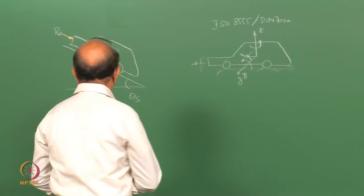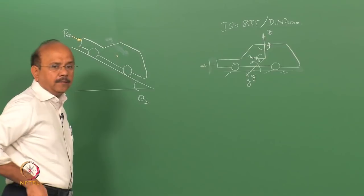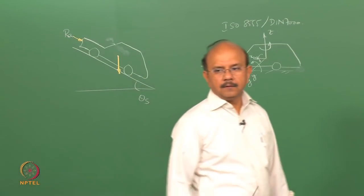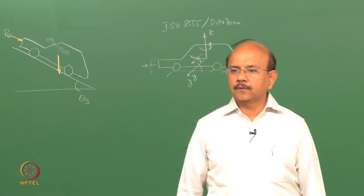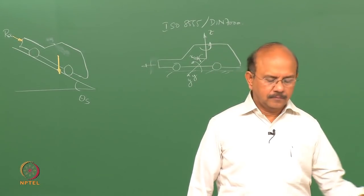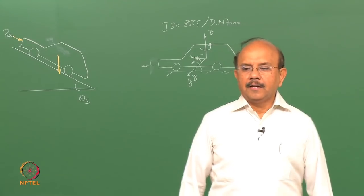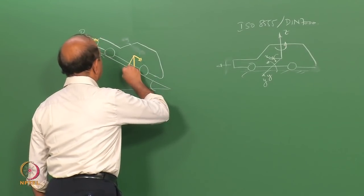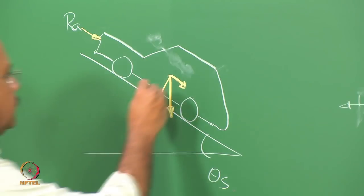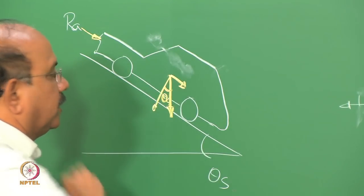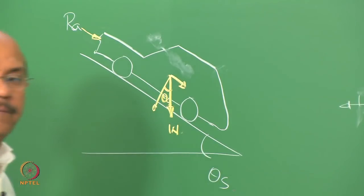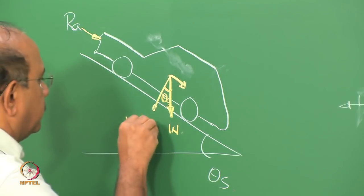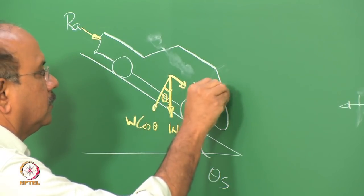The next important force acting on this body is the gravitational pull or gravitational force, which we write as mg or W. That can be resolved into two directions: if the slope angle is θs, then the components are W cosθ and W sinθ.